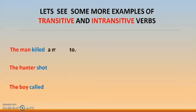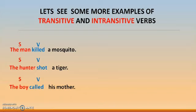If I add: 'The man killed a mosquito' — now it's a complete sentence. 'The hunter shot a tiger' — complete. 'The boy called his mother' — complete. So 'the man,' 'the hunter,' and 'the boy' are subjects; 'killed,' 'shot,' and 'called' are the verbs; 'a mosquito,' 'a tiger,' and 'his mother' are the objects. Without the object, these were not complete sentences. That is why these are called transitive verbs — where an object is required.